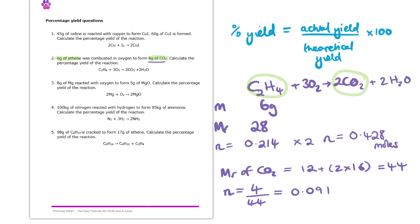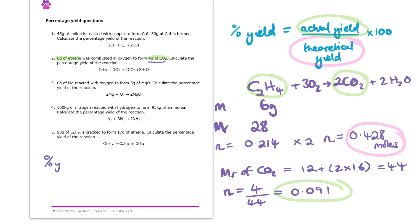So now we know the theoretical amount of moles we could get of carbon dioxide, and we also know the actual number of moles we made. We can work out the percentage yield by substituting these into the equation: 0.091 over 0.428, times by 100. That gives me 21.3% to one decimal place, and that there is the percentage yield of that reaction.